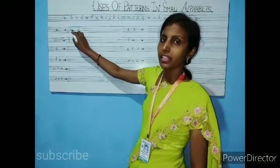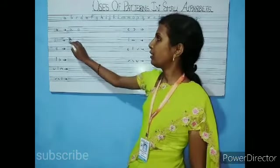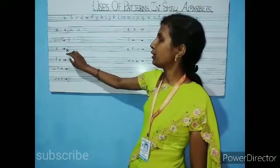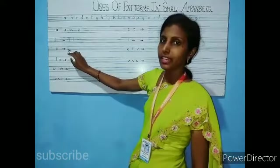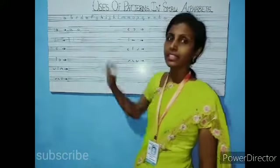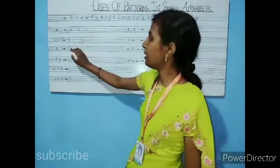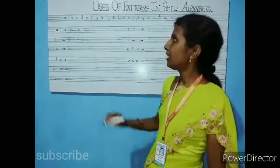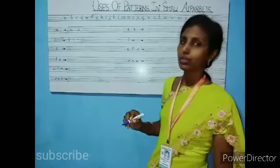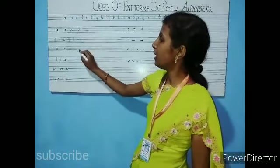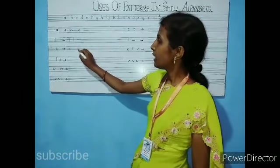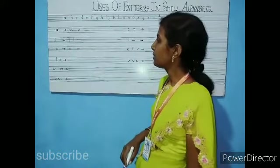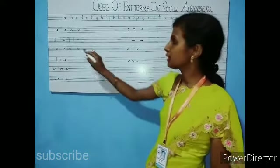We are using A in second and third lines. L uses first, second, and third line. Semi-circle C is in second and third line. We can also make small E with a semi-circle. Look here — in the middle of two lines, we write a semi-circle and just turn the line. It becomes small E.